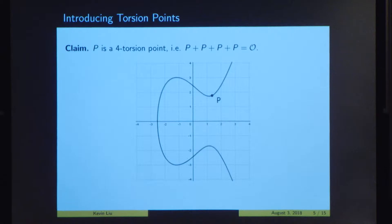So I looked at special points on elliptic curves called torsion points. And what torsion points are, are points where if you add them to themselves enough times, you will get the identity o. So here's just a simple example. So I claim that this point p right here is a four torsion point, i.e. 4p equals o.